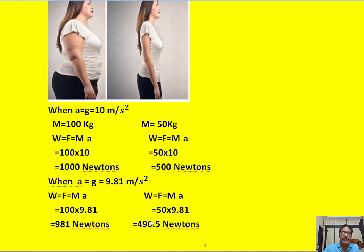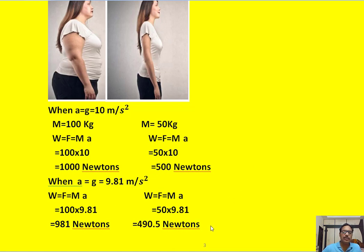Similarly, we can calculate the weight in gravitational units for the thin woman: W equals F equals M into A. M is 50 and the gravitational acceleration is 9.81, so the weight of the thin woman is 490.5 Newtons. From this discussion, we can say mass is not equal to weight. Mass is the matter contained in your body, whereas weight is the force acting on your body.